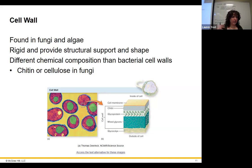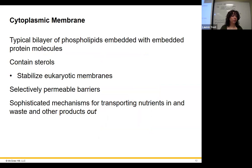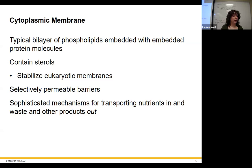The cell wall gives shape and structure — chitin for fungi, or cellulose for plants and algae. The cytoplasmic membrane is the lipid bilayer that holds everything inside the cell — it's always going to be inside the cell wall. So it's: number one, cytoplasmic membrane; number two, cell wall if you have one; number three, outer membrane if you have one — whether you're bacteria or eukaryotes.